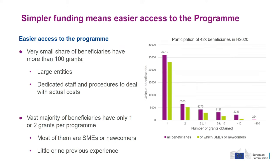It's important to look at a lesson learned from Horizon 2020. We looked into the universe of participants in Horizon 2020. As you may see in this graph, on the right side you have a very small percentage of beneficiaries which are large entities with more than 100 grants — they have the capacity for dedicated staff and procedures to deal with the complexity of actual costs. On the left side of the graphic, the majority of beneficiaries in Horizon 2020, most of them, have one or two grants. You might be an SME or a newcomer with little or no previous experience at all.